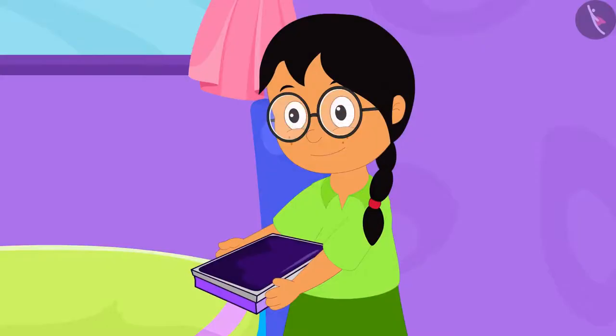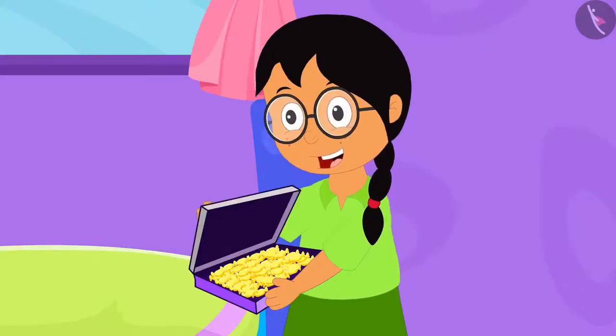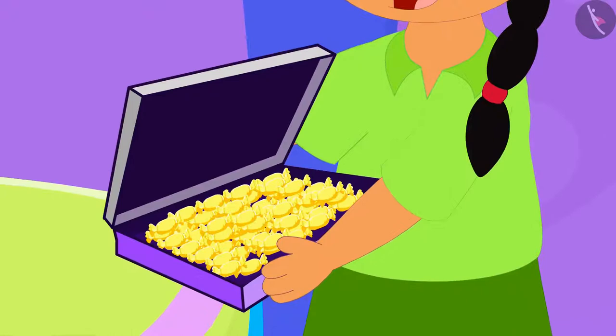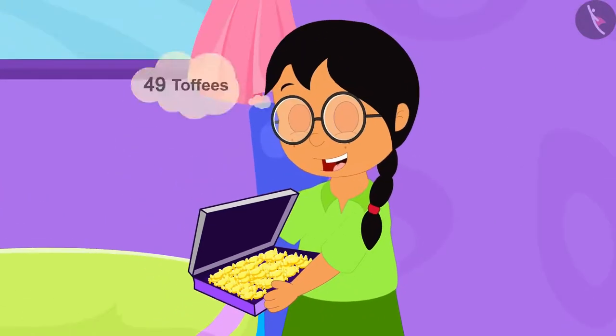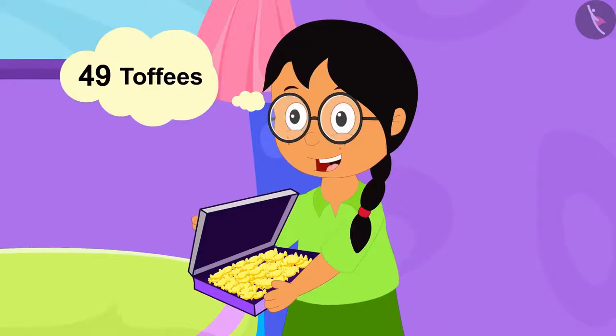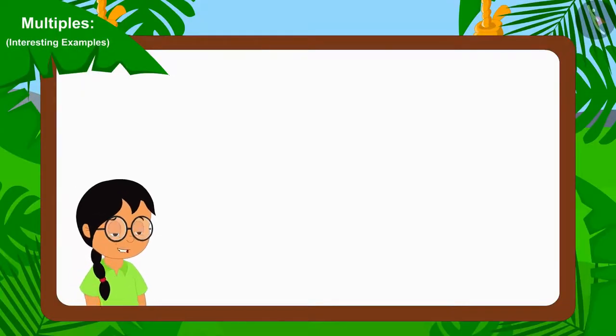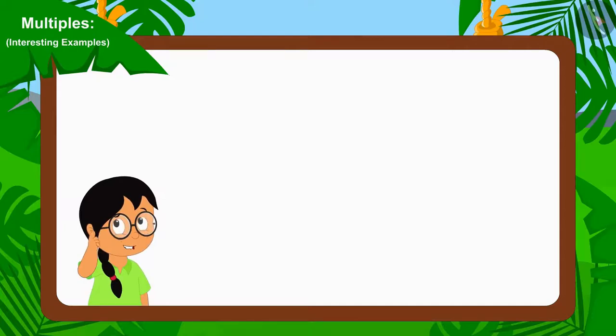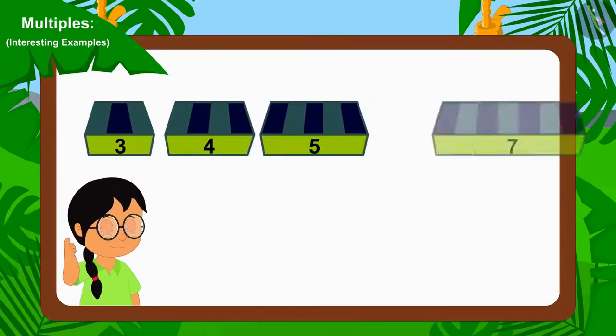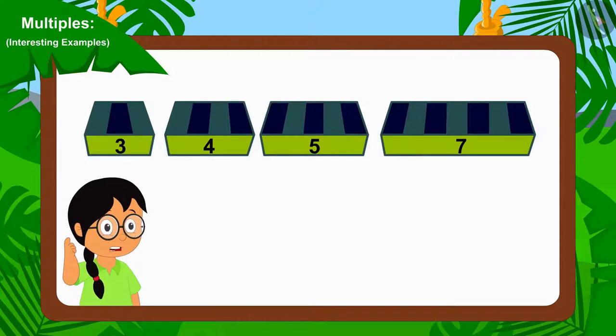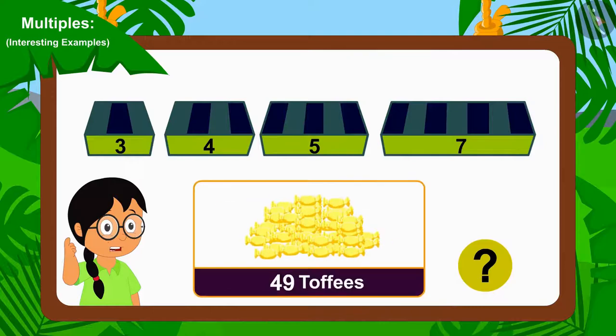First, Meenu opened a packet of pineapple toffees brought by her uncle. It has a total of 49 toffees. Now, Meenu is thinking which one out of the group of 3, 4, 5 or 7 should she use so that all the toffees are distributed equally.